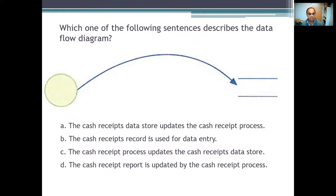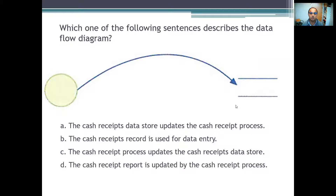Here is a very simple exercise to describe how the data flow diagram works. The circle is the process, the arrow is the flow, and the parallel lines are the storage of the data. So here we say: the cash receipt process updates the cash receipt data store. This is the first item you need to know — how to build up the data flow diagram.